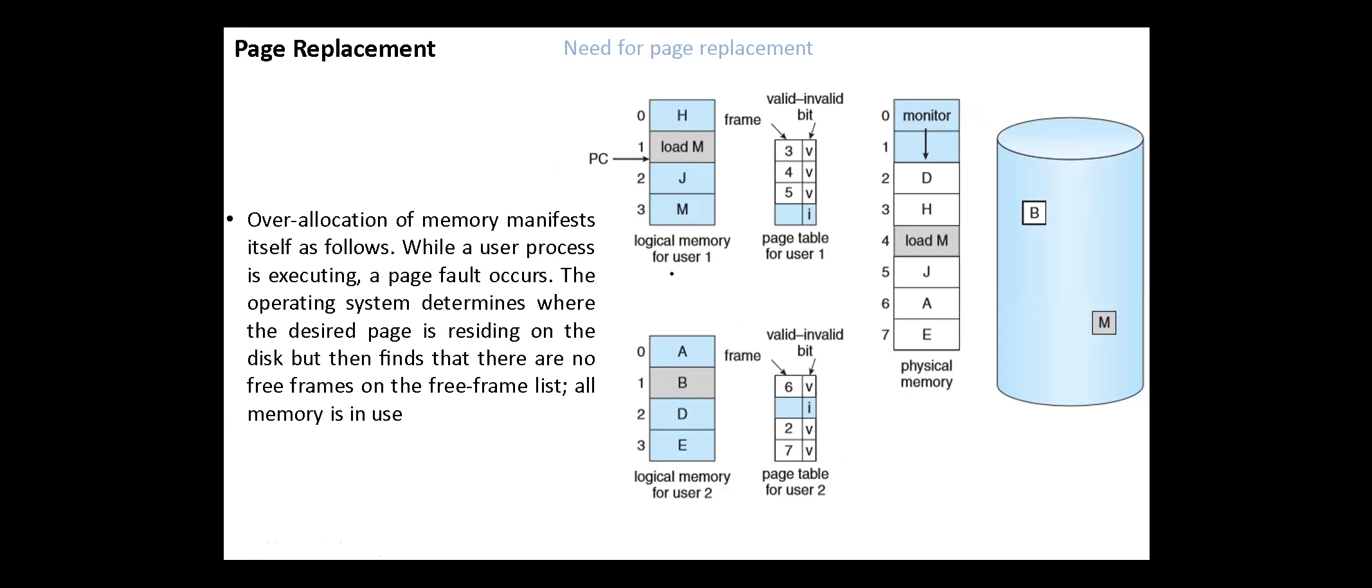For example, user one is referencing page three and its valid-invalid bit is invalid, which means that the page is not in memory. In the same manner, user two references logical page one. Again, it is not in memory and we have no free frames in physical memory to bring these pages from the backing store.